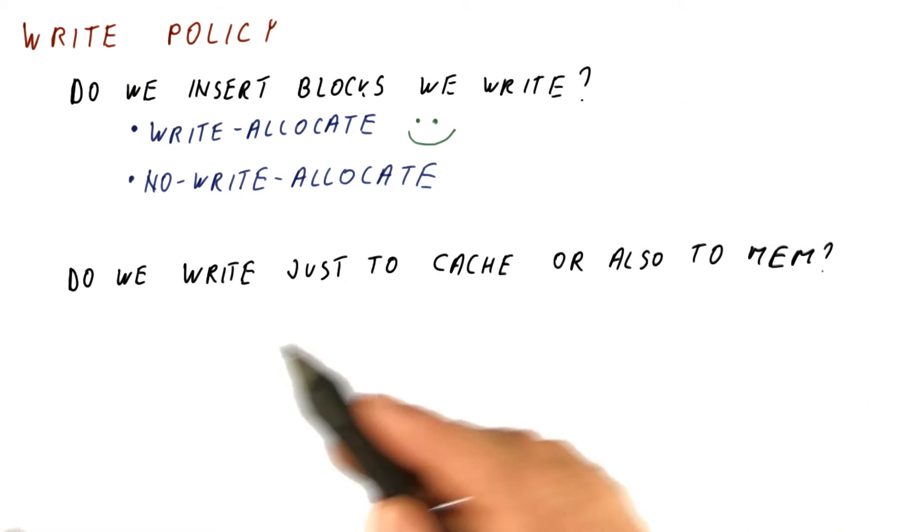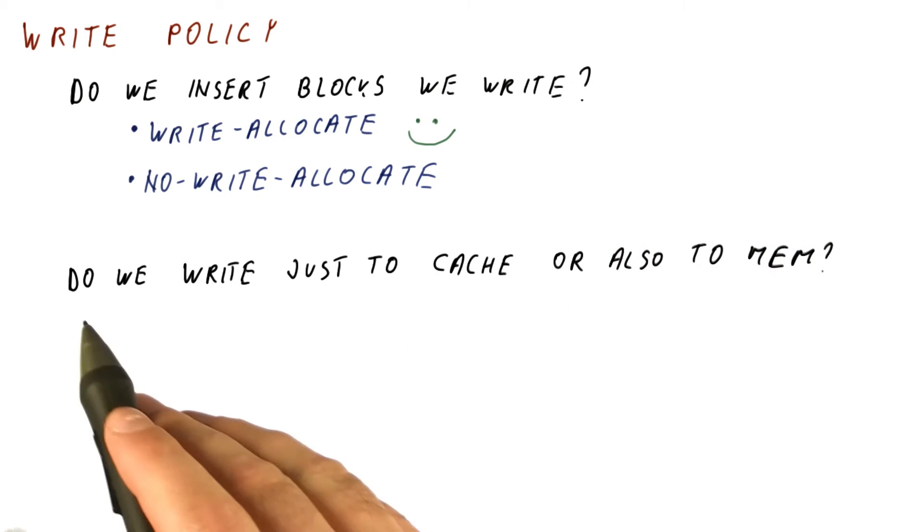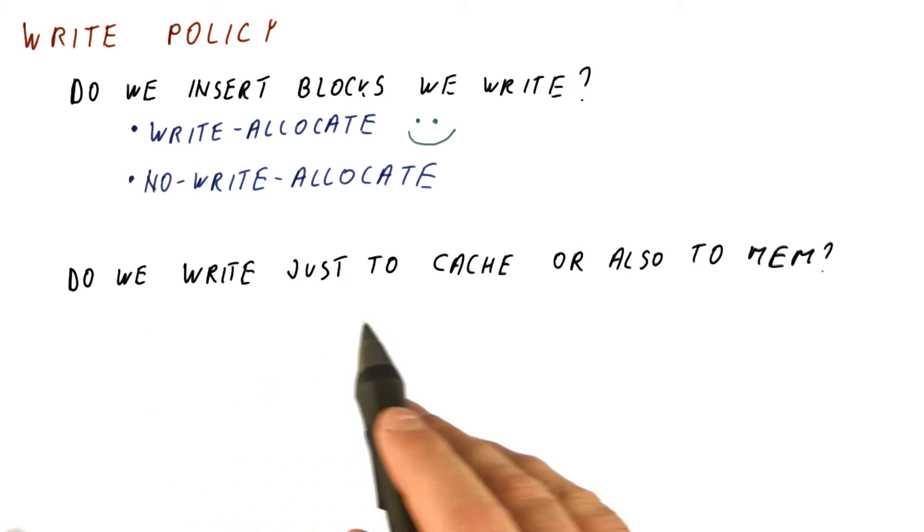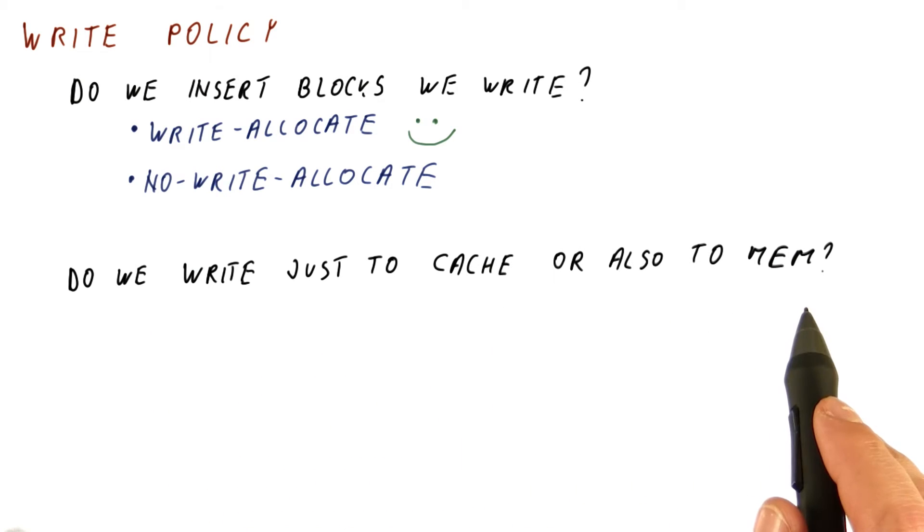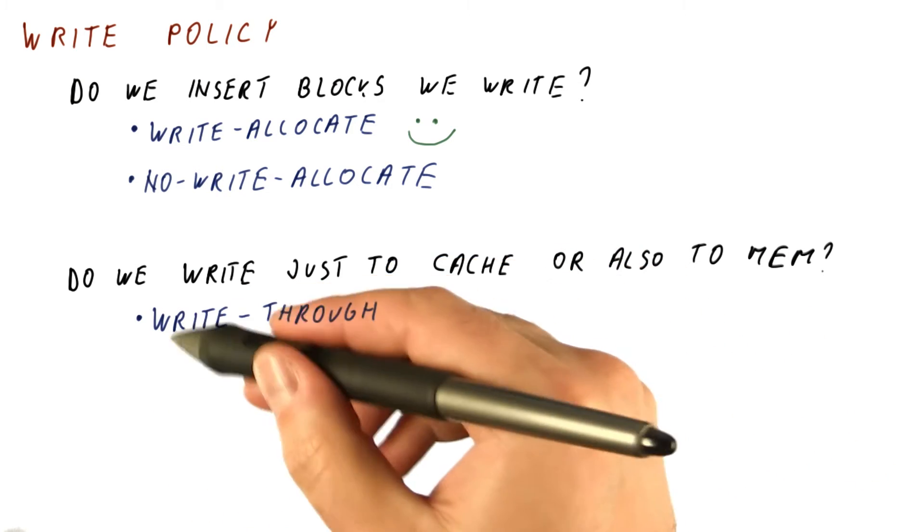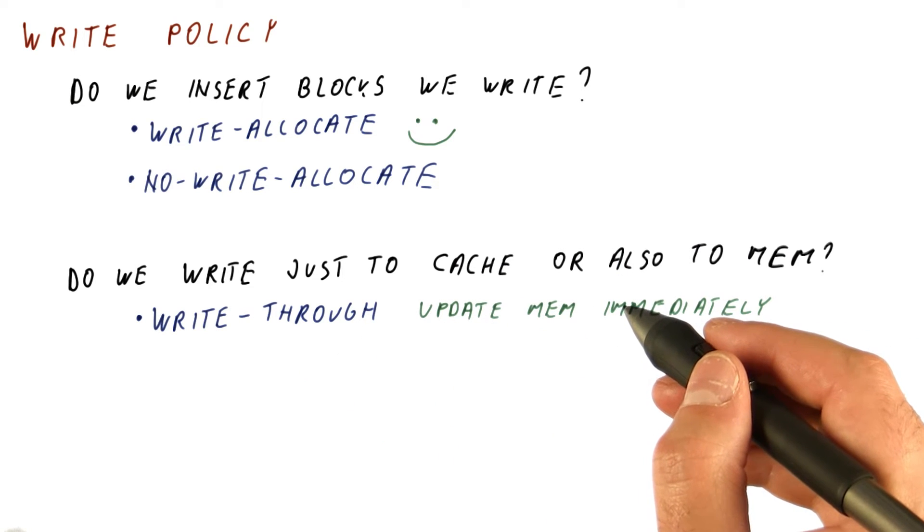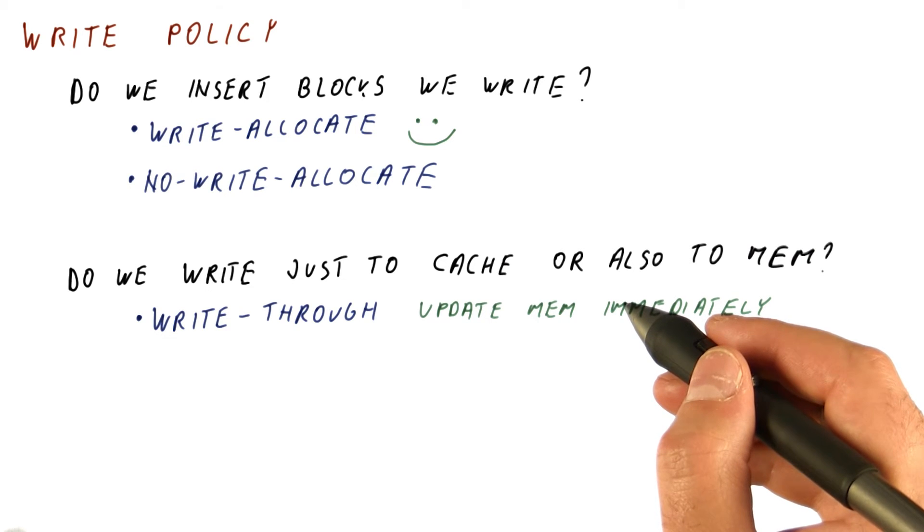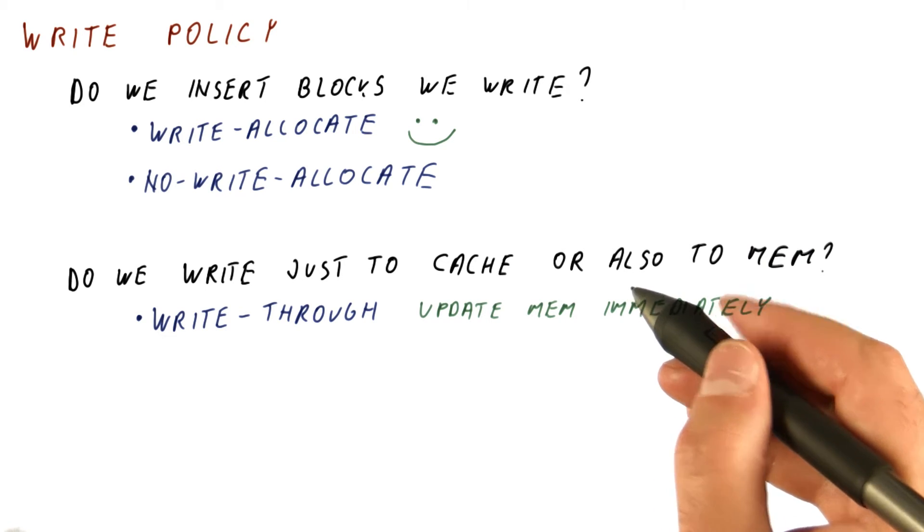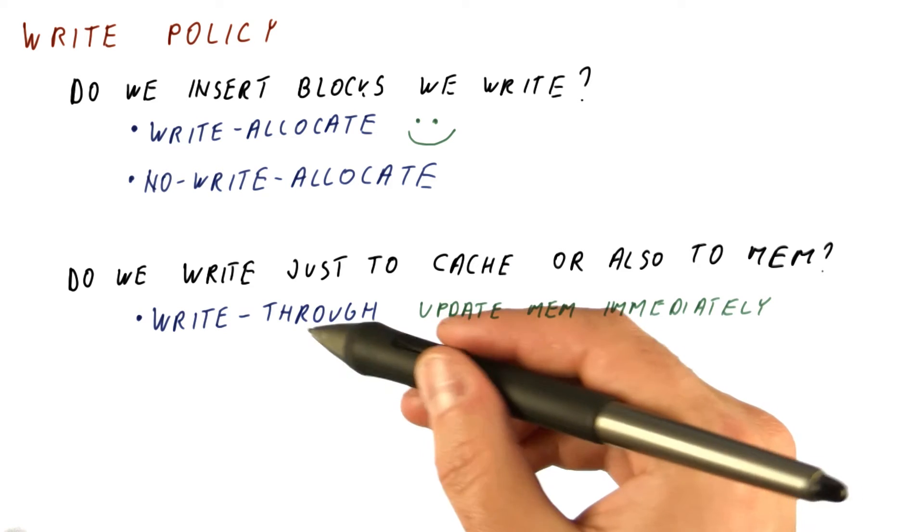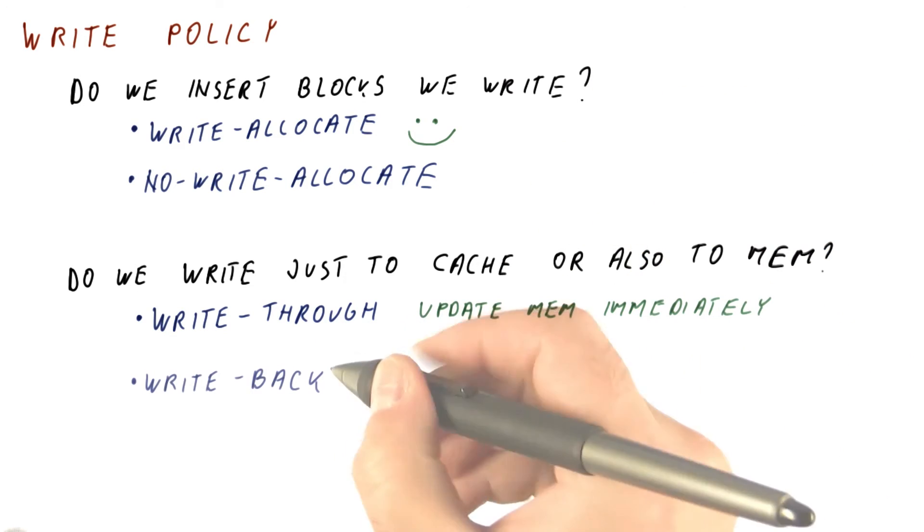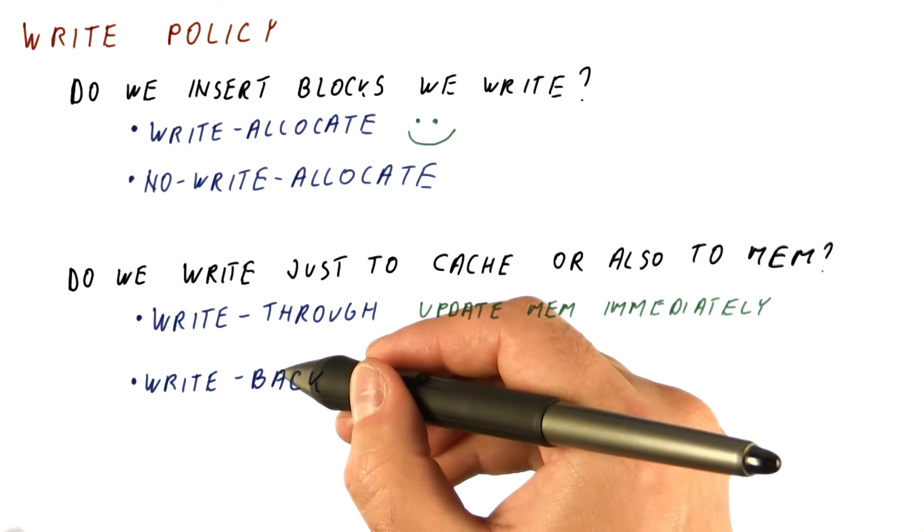The other aspect of the write policy is when we have a write, do we write just to the cache or also to the memory? We can have a write-through cache, which updates the memory immediately. So pretty much, when a write happens, we write to the cache, and we just propagate the write also to memory. That's why it's called write-through, because the write kind of goes through the cache.